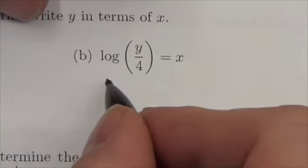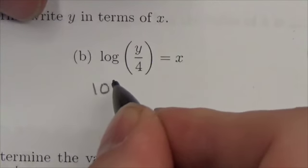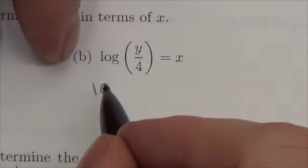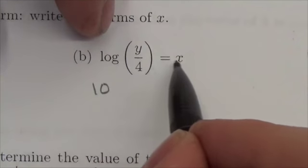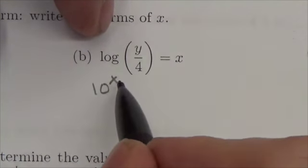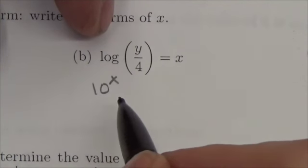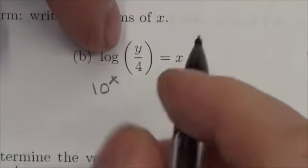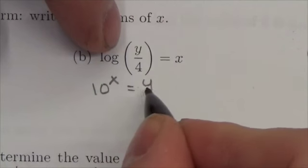So this is a common log, and the base of the logarithm will be the same as the base of the power. So write the 10 down here. A logarithm is equal to an exponent, so whatever the logarithm is equal to, that will be the exponent on the power, and then the argument of the logarithm is what that power is equal to.